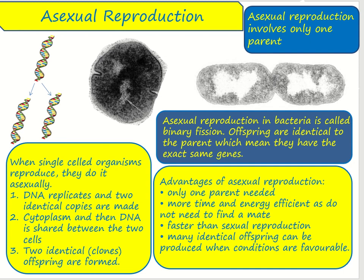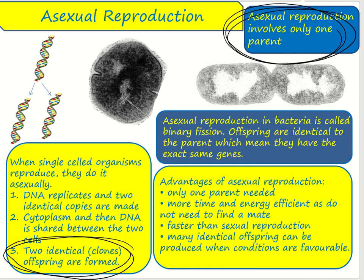What you need to know about asexual reproduction is that it only involves one parent. When organisms reproduce asexually, you get two identical offspring — they are genetically identical, there is no variation whatsoever. The benefit of this is that it's energy efficient and much quicker because you don't have to find a mate, and offspring can be produced in large quantities.